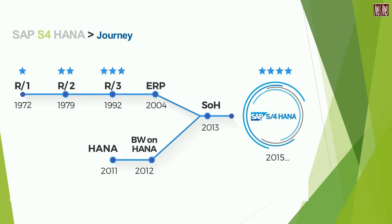Between 1992 and 2015, SAP massively renovated their platform, adopted many new technologies, and finally in 2015 successfully launched the fourth generation of SAP, commonly known as SAP S4 HANA.